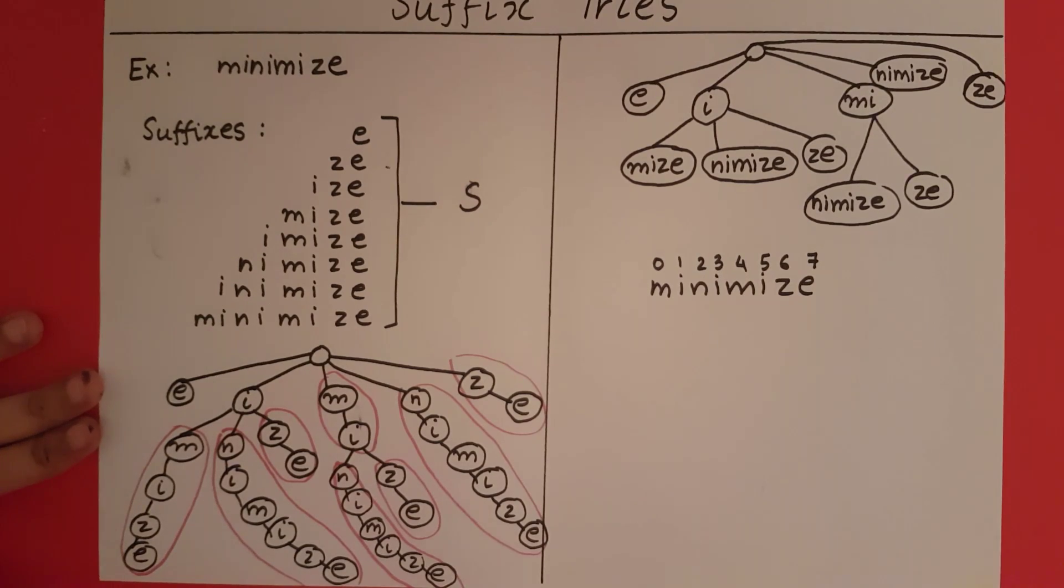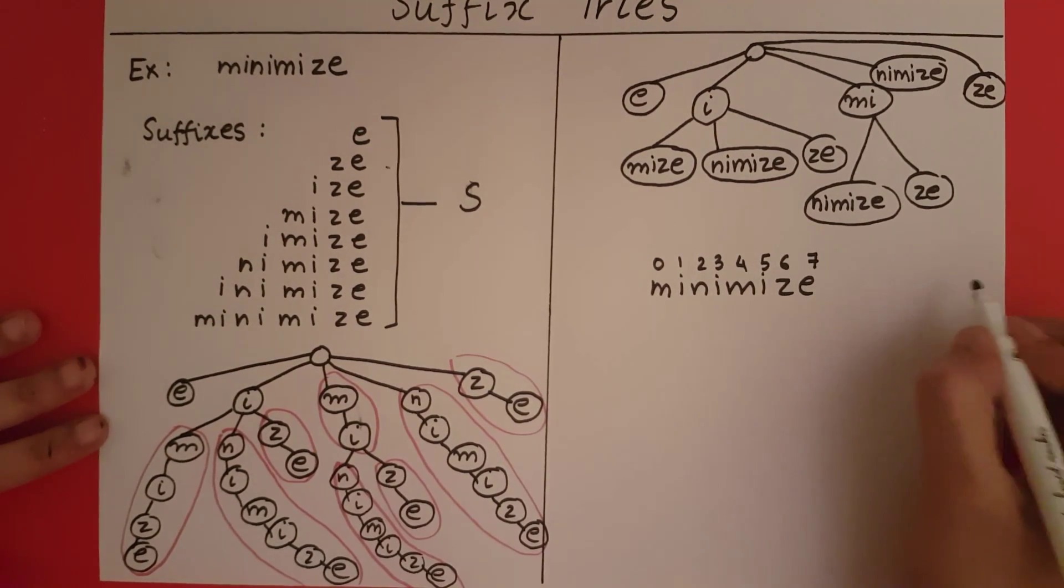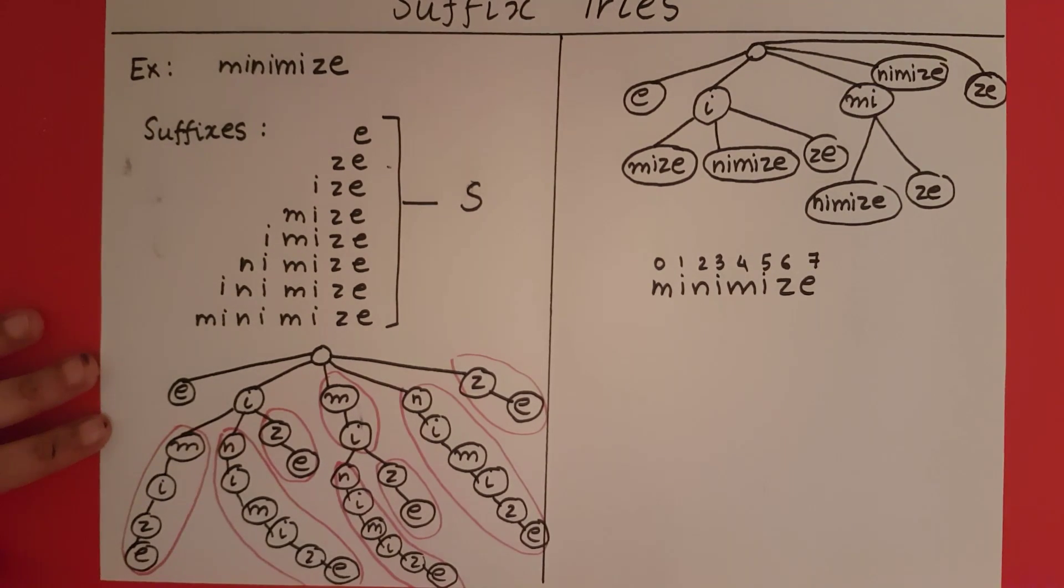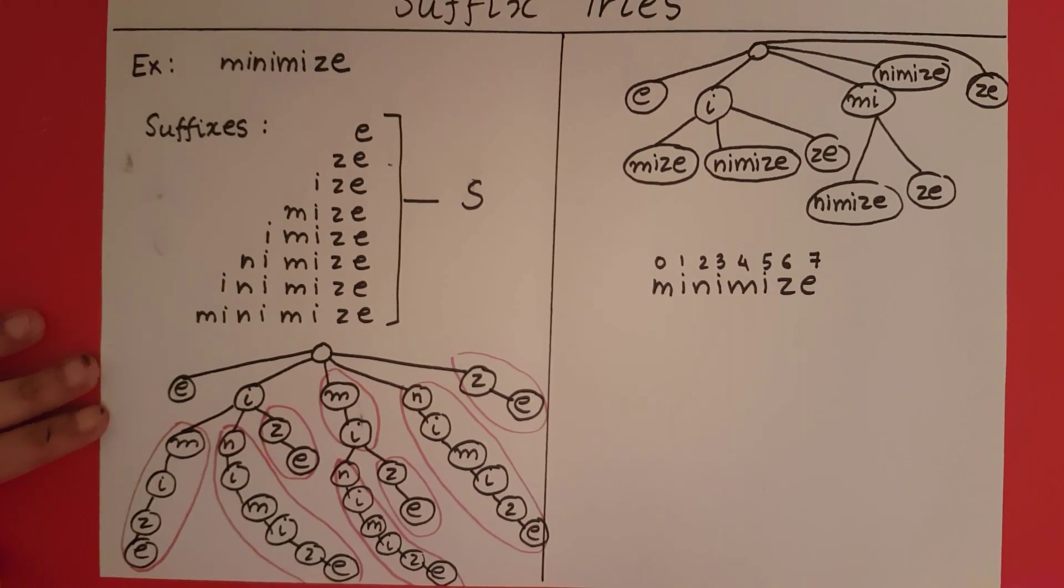In our representation of compressed tries we gave it as i, j, and k. i will represent the word of S. Since minimize is going to be the same word, we are not going to include i in every node. We are only going to give the starting and ending index, that is, we are only going to give j and k. Let's see what the representation of the compressed trie looks like.